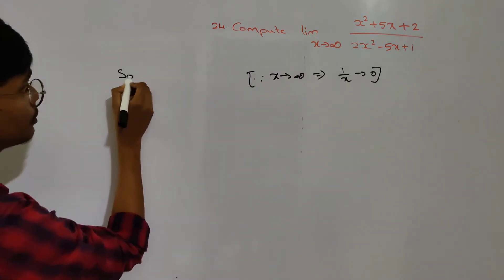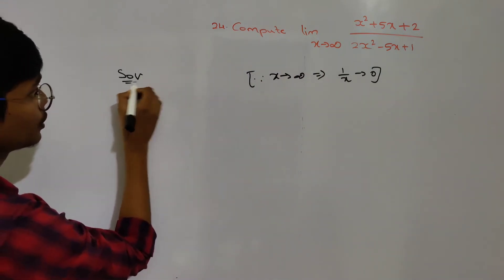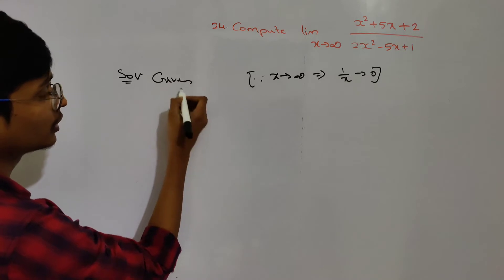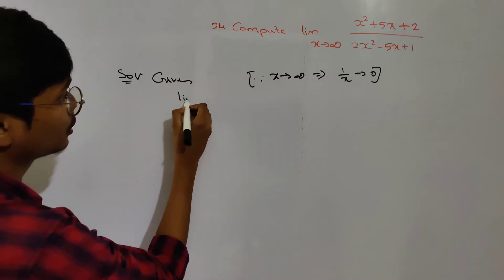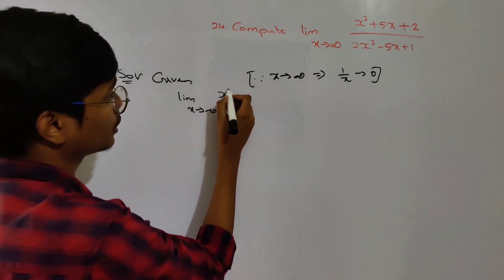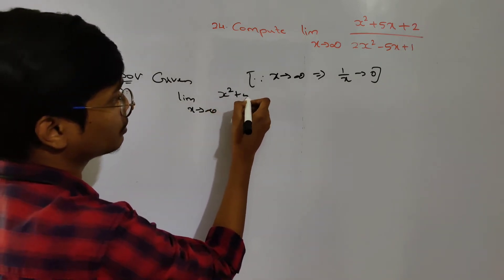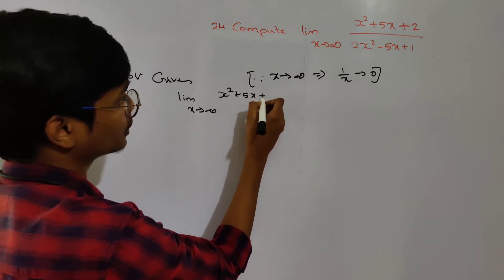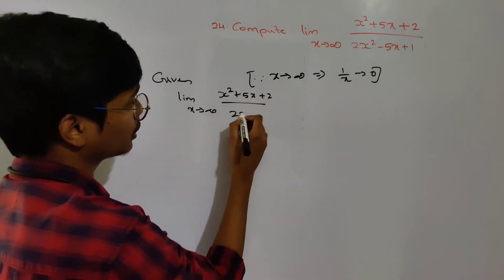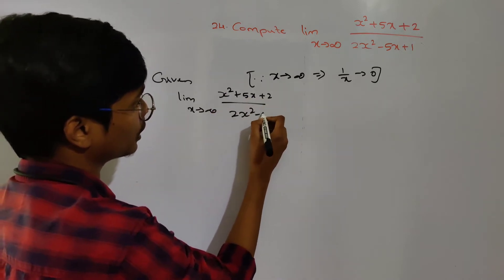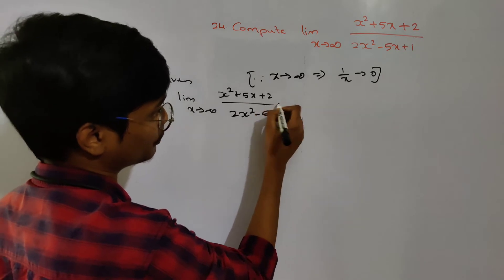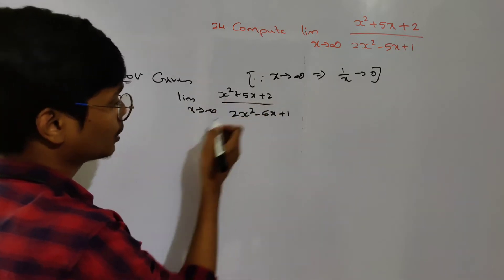Given: limit x tends to infinity of x squared plus 5x plus 2, divided by 2x squared minus 5x plus 1.